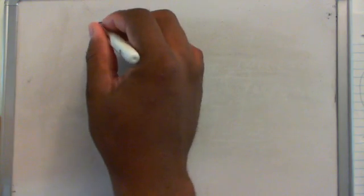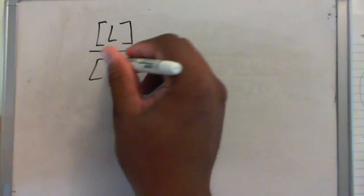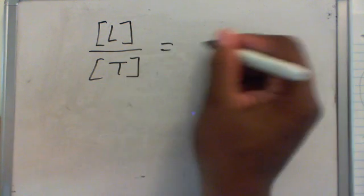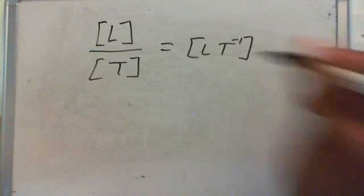So we know that it's a length, so it's L over a time. This is velocity. We can write this like this, and it's usually written like this in dimensional analysis.